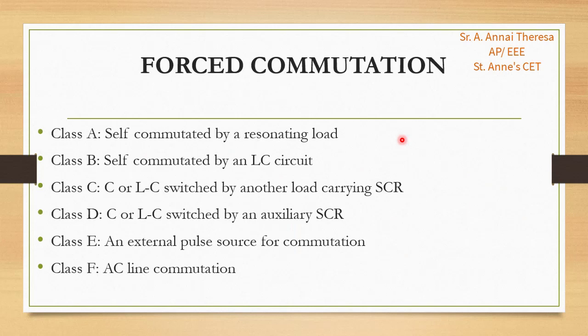The next type is forced commutation. The thyristor can be turned off by reverse biasing the SCR or by using active or passive components. Thyristor current can be reduced to a value below the holding current. Since the thyristor is turned off forcibly, it is termed as forced commutation. Basic electrical components like inductance and capacitance are used as commutating elements.